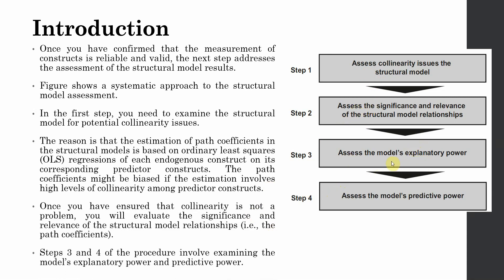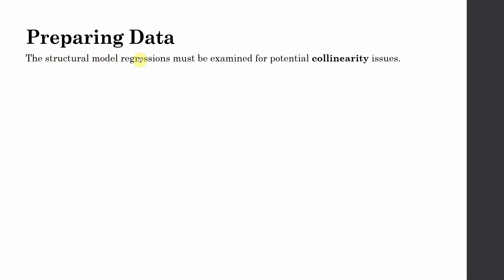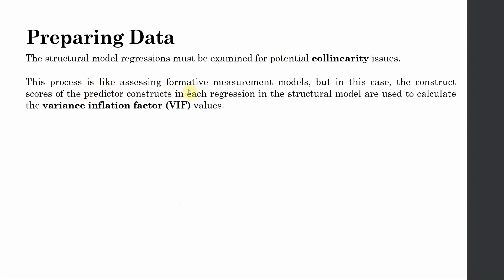Then we move on to assess the explanatory and predictive power. For this introductory session I'm going to stick to steps one and two, and we will discuss all steps in detail later. Evaluating structural model — step one: assessing multicollinearity. The structural model regressions must be examined for potential collinearity issues. This process is like assessing a formative measurement model as we have done before, but in this case the construct scores of the predictor constructs in each regression are used to calculate the variance inflation factor (VIF).